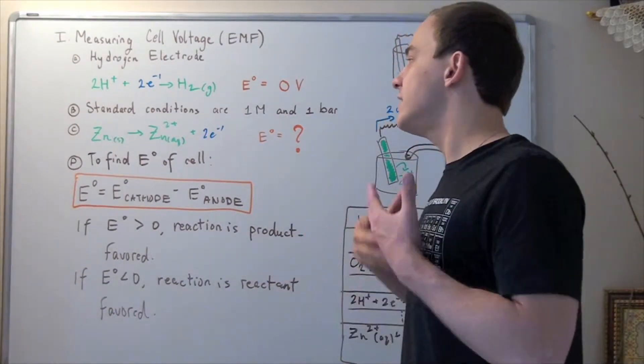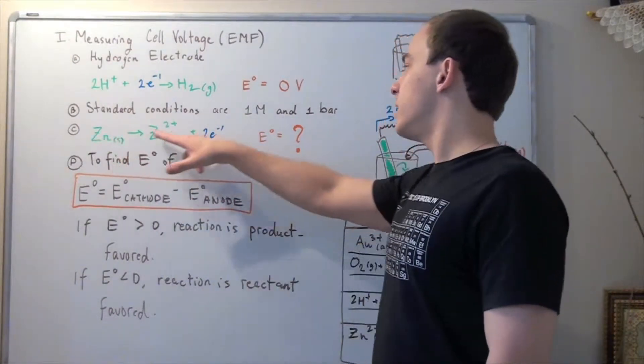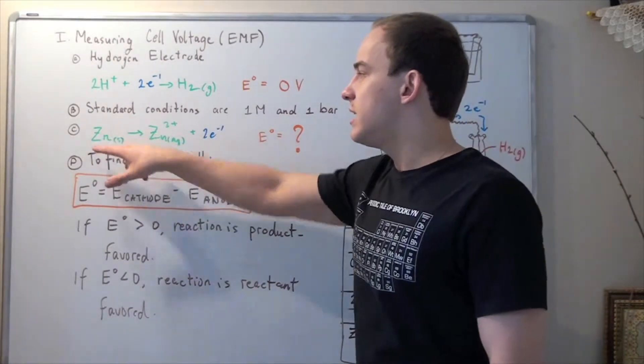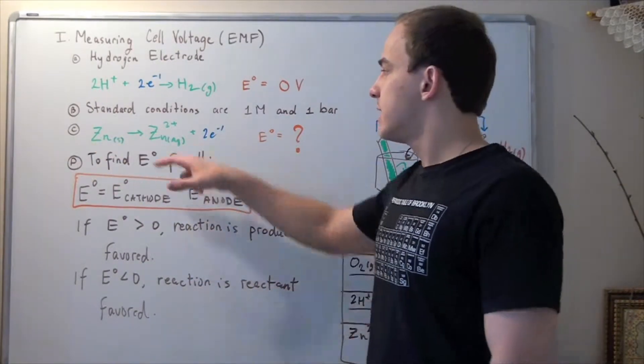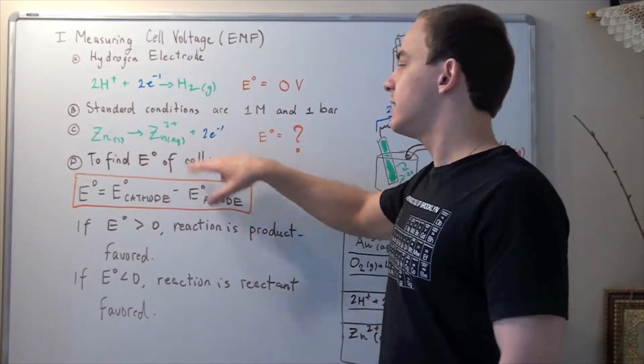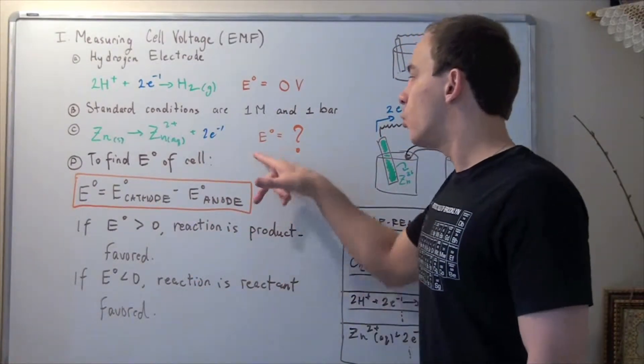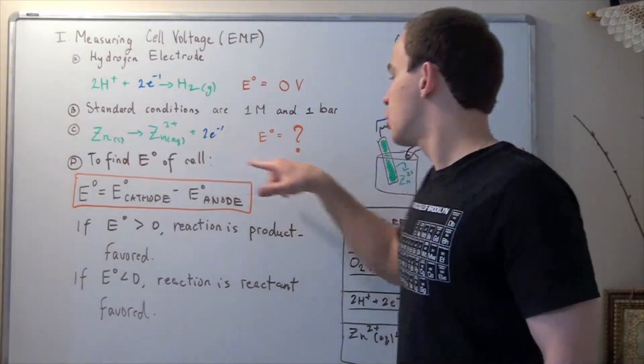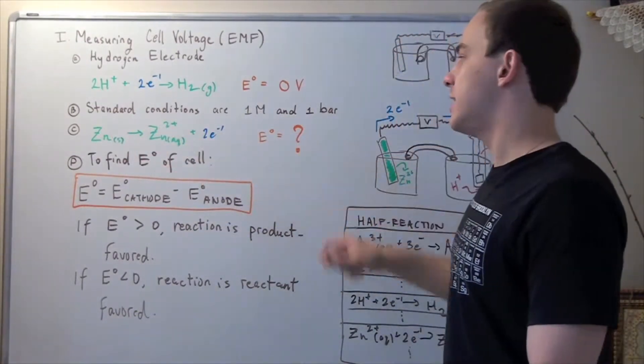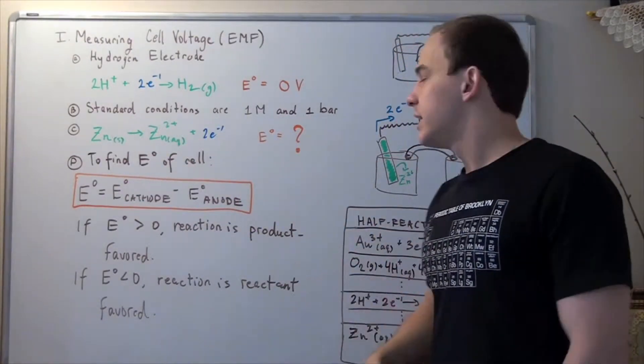So for example, suppose we have a second reaction. In this reaction, Zn solid is oxidized to Zn2+ and it releases two electrons. And suppose we wanted to find what the cell voltage of this half reaction is. The way we do it is the following.